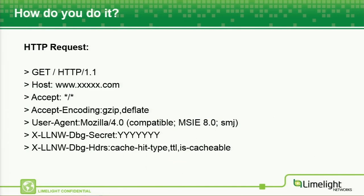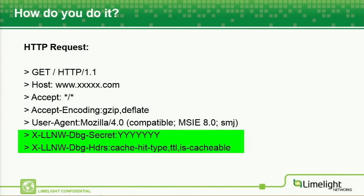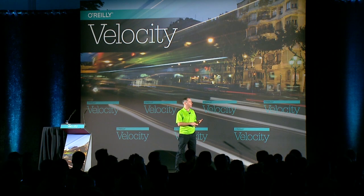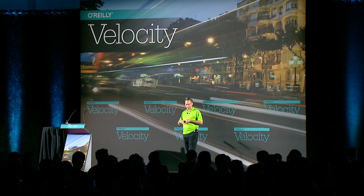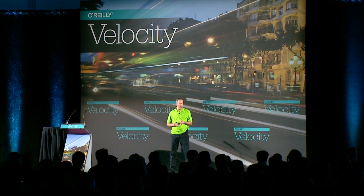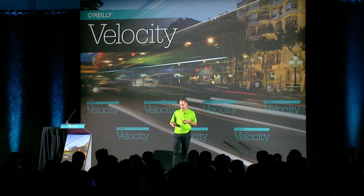Here's a straightforward example of how to do it. Here's a curl request — we're going to go to www.5x.com, which is a bit like an old Australian beer but newer. We're going to add a couple of additional headers: the secret that we send through which tells us we're authenticated to pass back the headers, and then a string of the headers we're interested in getting back — the cache hit type, the TTL, and whether or not this is cacheable.